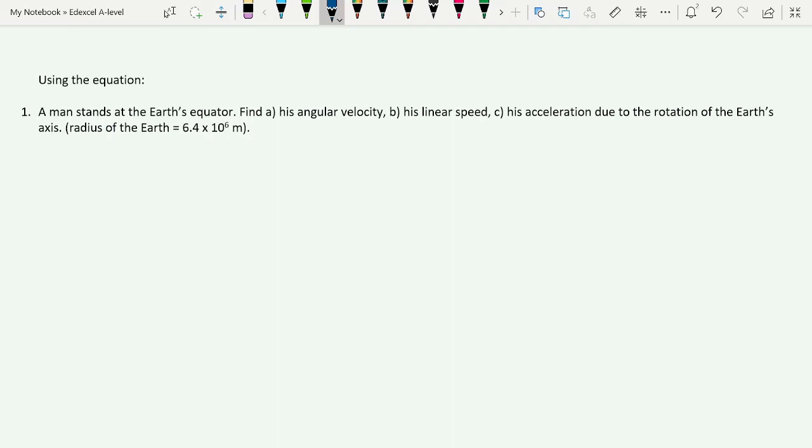I'll do three questions as examples for you. You can find more examples in my Patreon page. I'll walk through exam questions there as well. So, a man stands at the Earth's equator, we want his angular velocity, that's omega, his linear speed, that's our V, and his acceleration due to the rotation of the Earth. Angular velocity: we know from previous video that omega is equal to 2 pi over T. T, because it's the Earth that's rotating here, is going to be 24 hours.